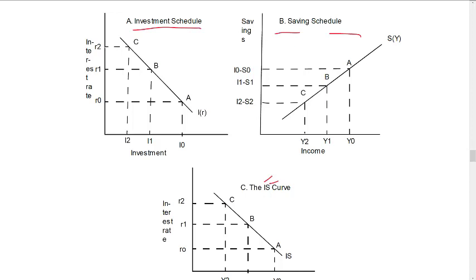The LM curve is derived from the IS curve. Investment is a saving — this is the investment schedule. We are going to study this diagram. Here is r2, r1, r0; here is S0, S1, S2; this is 0, 1, 2. This is the same diagram — the same matching.